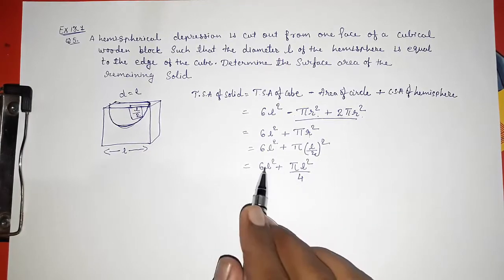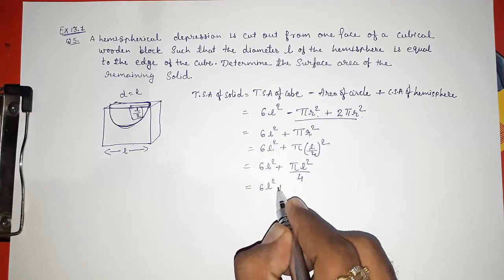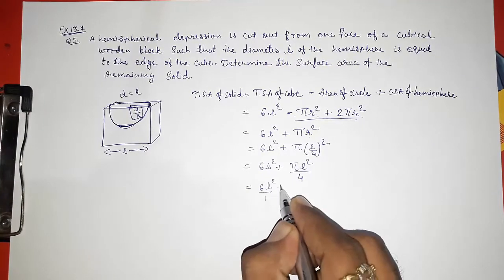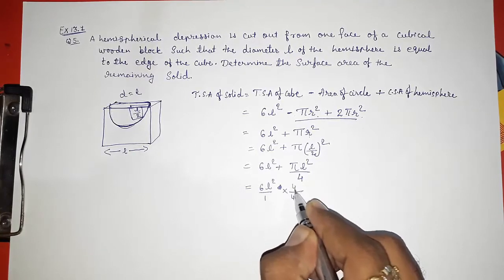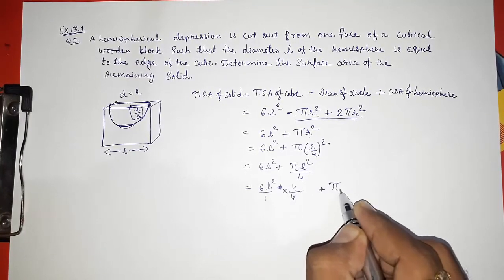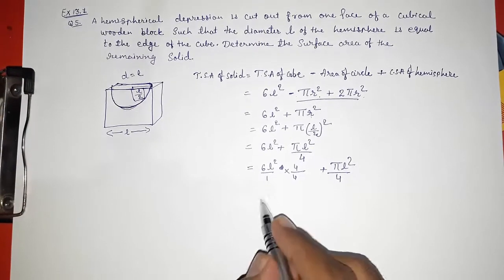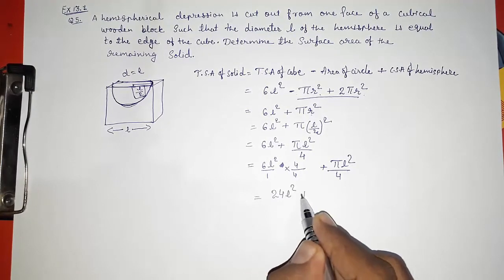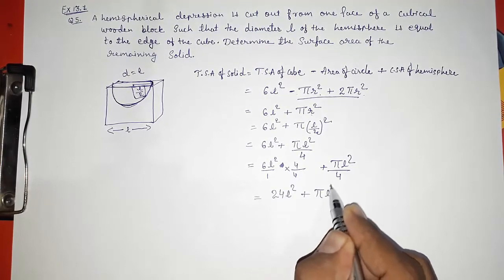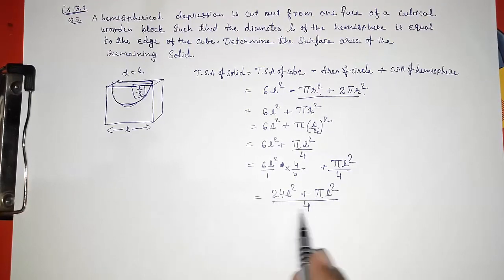Now we have to find out the LCM, that is 6L² upon 1 into 4, 4 by 4 plus πL² by 4, so the denominator will become 4 only. Now 6 times 4 is 24L² plus πL² whole by 4.